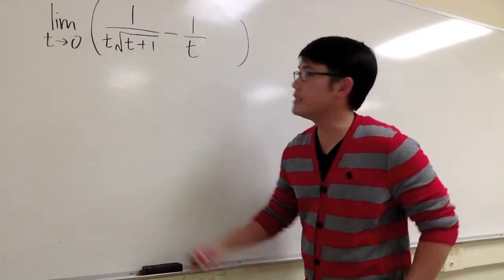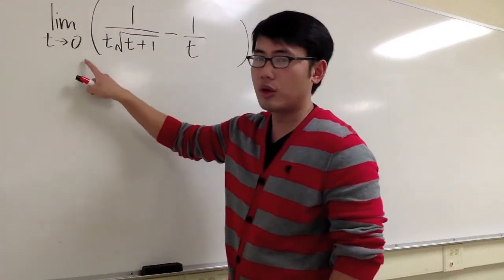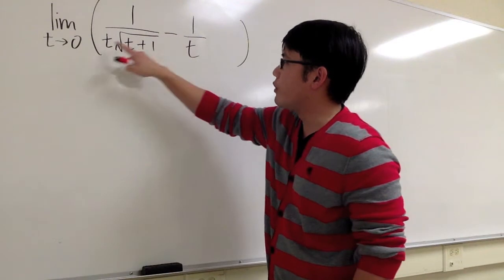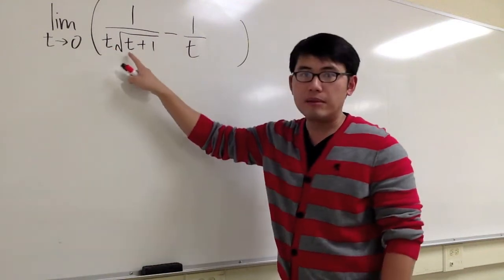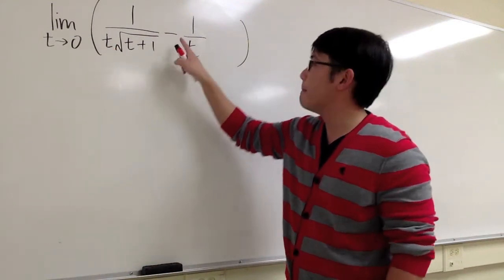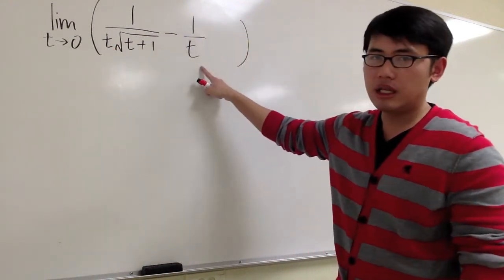Let's look at this limit. The limit when t approaches 0, we have 1 over t times square root of t plus 1, minus 1 over t.